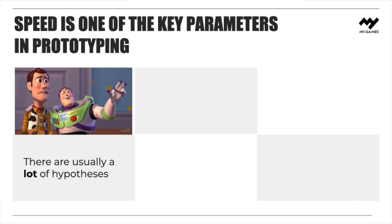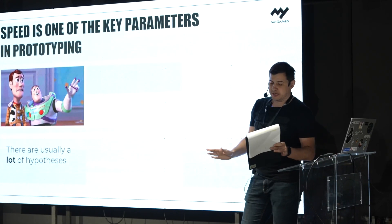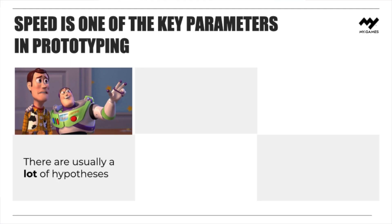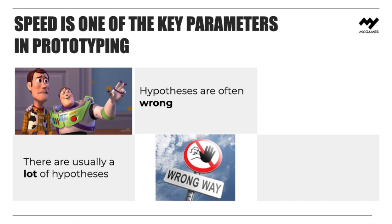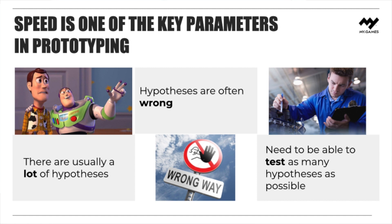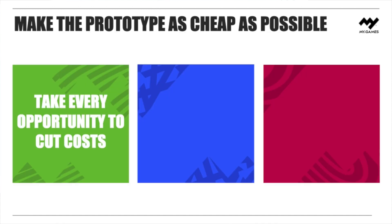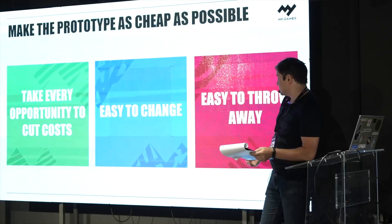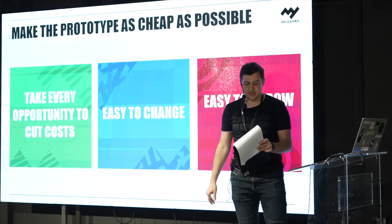Speed is one of the key parameters in prototyping. There are usually a lot of hypotheses and it's physically impossible to check them all. Unfortunately, hypotheses are often wrong — there are fewer paths to success than to failure. That is why you need to be able to test as many hypotheses as possible, and that is why you need to make the prototype as cheap as possible. Take every opportunity to cut costs. Prototyping is iterative and you should be able to make quick fixes at any moment. If nothing helps and your chosen path is a complete dead end, don't be sorry to throw everything into the trash.